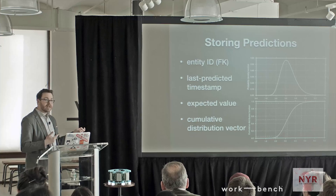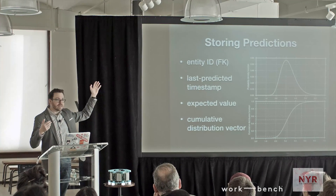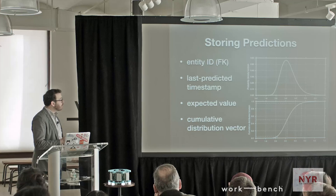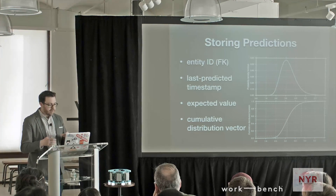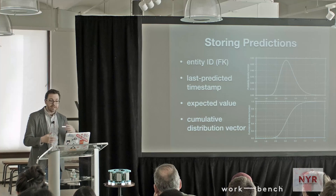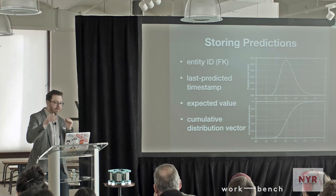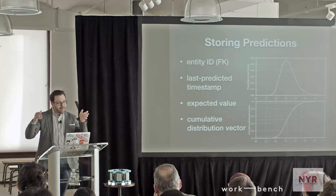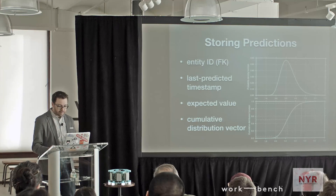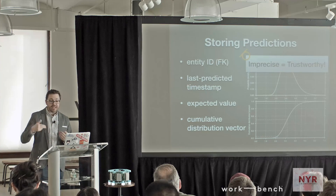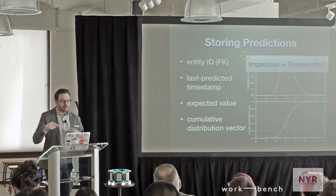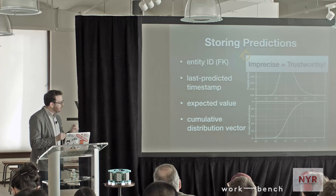Worth noting what I actually stored in the database: the ID or foreign key of the entity so it could be joined; a timestamp, which is handy for ensuring predictions haven't gone stale; and the results of the forecast process. Since it was a quasi-Bayesian thing with a posterior distribution, I stored the expected value as well as the CDF. The CDF is great because it allows you to read off prediction intervals — you can say the outcome should be between the 10th and 90th percentile. Being imprecise when you know you're imprecise builds trust, so if your model can do the 'shrug' and indicate uncertainty, people will trust it more when it's actually confident.